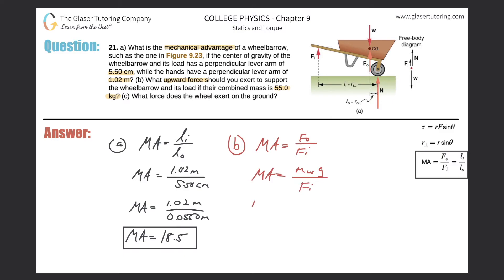So just solving for the input force, then it becomes the mass of the wheelbarrow times gravity over the mechanical advantage. All I did was just switch those two basically. And now we can plug in the numbers, so the mass of the wheelbarrow and its contents was 55 kilograms, gravity is as we should know by now 9.8, and then we're going to divide that by the mechanical advantage which was about 18.5. So the input force now should be 55 times 9.8 divided by that answer, so it's 29.1 newtons.